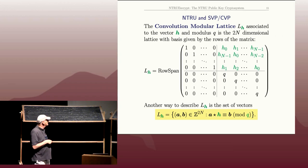Then L_h is the sublattice of Z^{2n} consisting of pairs a and b where the convolution product with Alice's public key is congruent to b mod q.